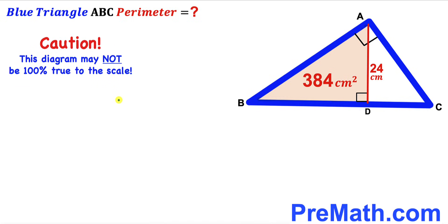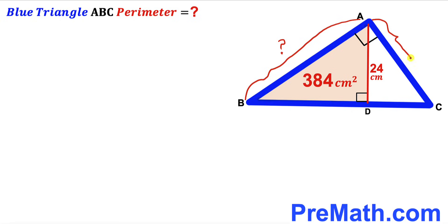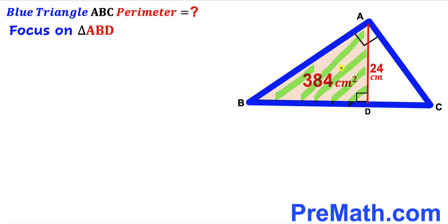Let's get started. Since we are interested in calculating the perimeter of this blue triangle ABC, our task is to calculate the length of side AB, the length of side AC, and finally this side BC as well. Now we are going to focus on right triangle ABD.